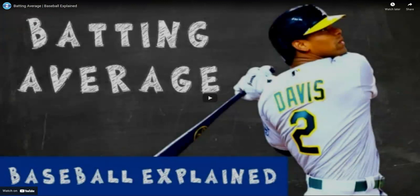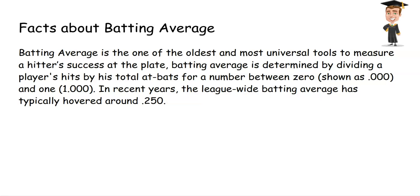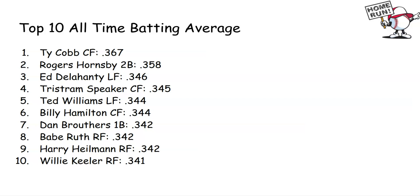I hope you guys paid attention to what he said. Facts about batting average: batting average is one of the oldest and most universal tools to measure a hitter's success at the plate. It is determined by dividing a player's hits by his total at-bats, for a number between zero and one. In recent years, the league-wide batting average has typically hovered around .250. Top 10 all-time batting average — Ty Cobb is the leader.